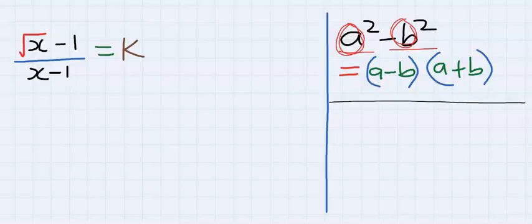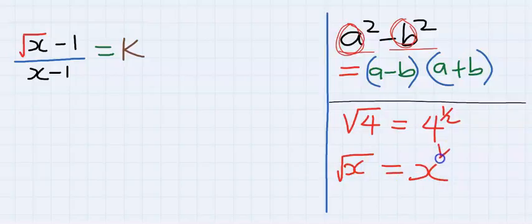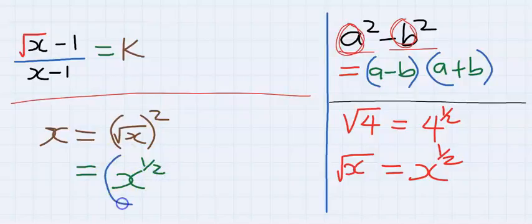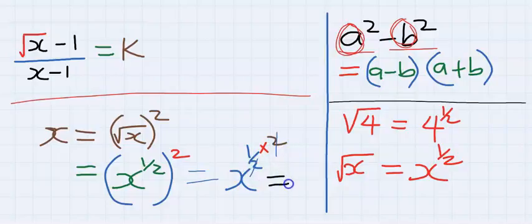Also in mathematics, square root of 4 is the same thing as 4 to the power of half. That is, square root of x is the same as x to the power of half. Subsequently, x equals square root of x in bracket squared, that is x to the power of half squared. Half times 2 cancels out and you end up having x only.